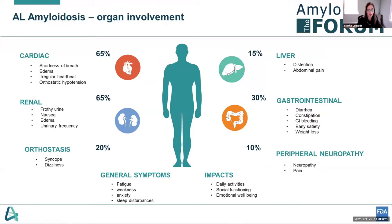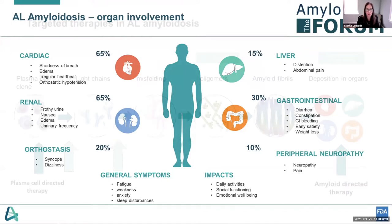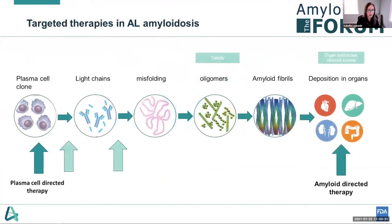We'll hear more about the different organ groups as we move forward. There is a significant unmet need for therapies. Current treatments, including the recently and first approval last week of Darzilex, are aimed at targeting the clone and reducing the amyloid light chains. Additionally, novel approaches are targeting the amyloid deposition. Future approaches may be aimed at modulating light chain aggregation and proteotoxicity.